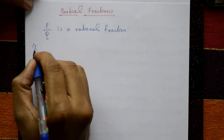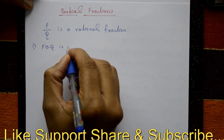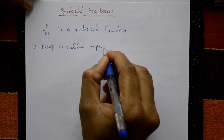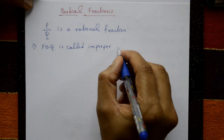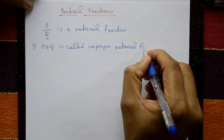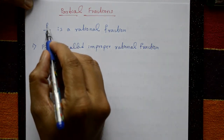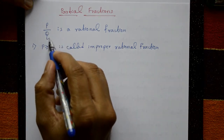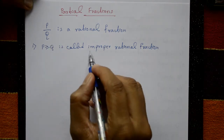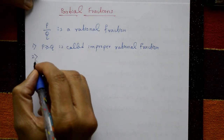Now the first case: when the degree of P is greater than or equal to the degree of Q, it is called an improper rational fraction. That means when the numerator degree is greater than or equal to the denominator degree, it is called an improper rational fraction.